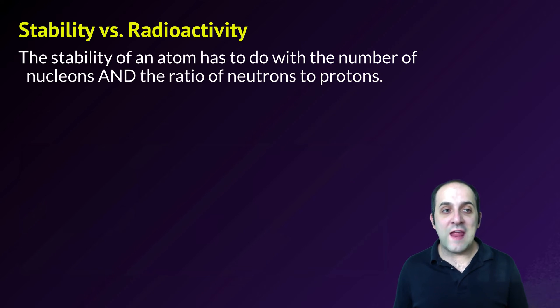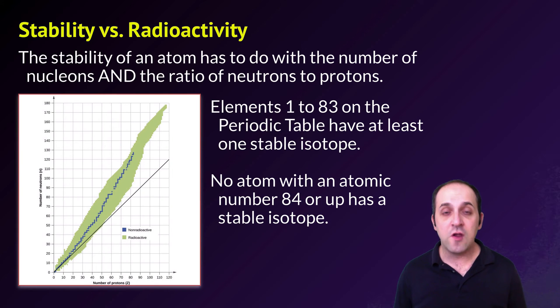So it's important to understand that when we determine the stability of an atom, it really has to do with the number of nucleons it has and the ratio of neutrons to protons in those nucleons. So elements 1 to 83 on the periodic table have at least one stable isotope. But no atom with an atomic number of 84 or up has a stable isotope. At that point, the number of nucleons is just too massive for the strong nuclear force to hold everything together.